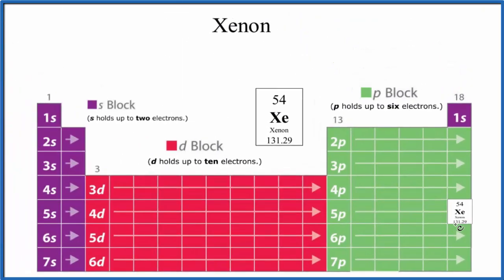So let's write the electron configuration. We have 1s1, 1s2. S is full with two electrons. So 1s2, 2s2. Then we go over to 2p6, 3s2, 3p6, 4s2.